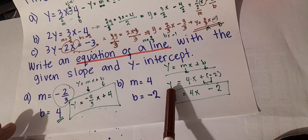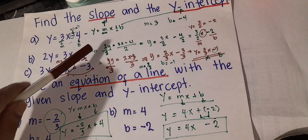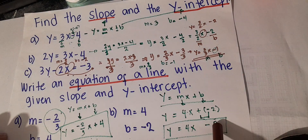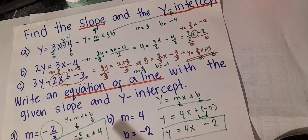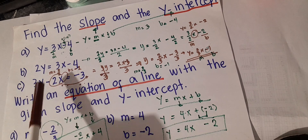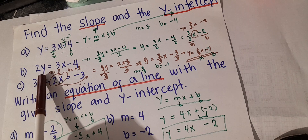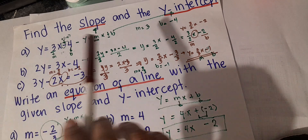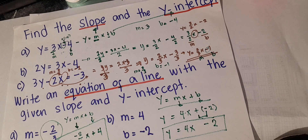That's how we write the equation of a line given the slope and y-intercept, and how to find the slope and y-intercept from a given equation. Remember: always write it in slope-intercept form. If it's not in that form, isolate the y — y should always be alone with no number beside it. Put everything else on the other side. That's it for today. I hope you learned something. Bye!